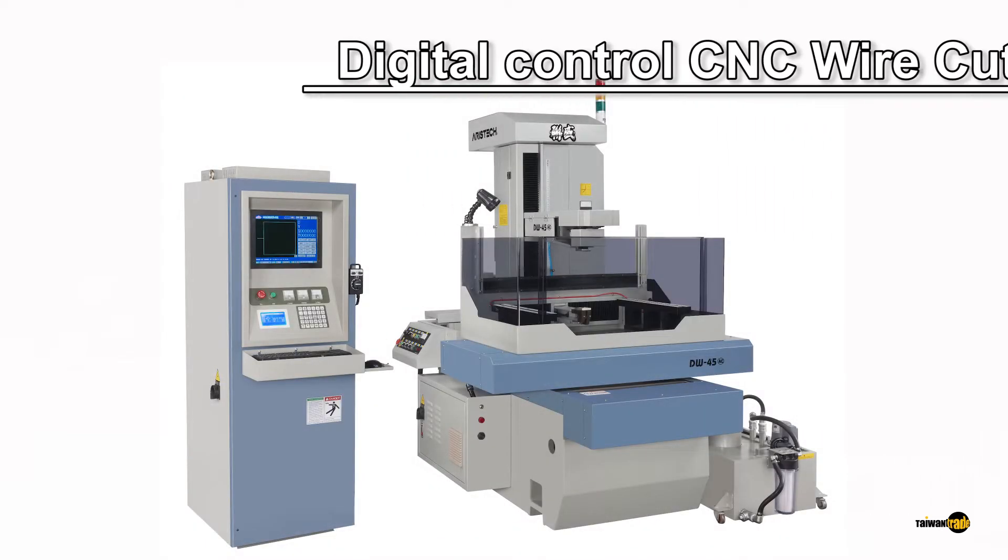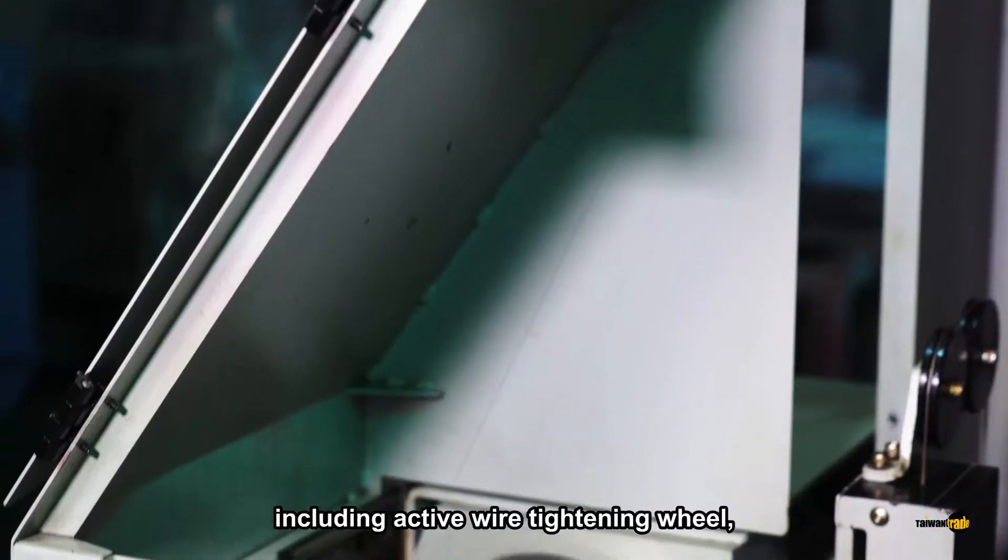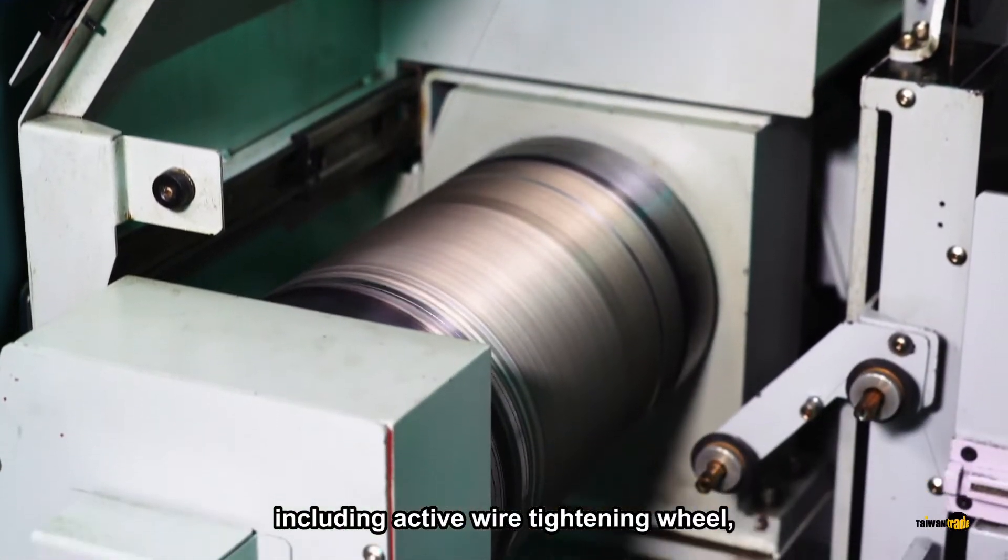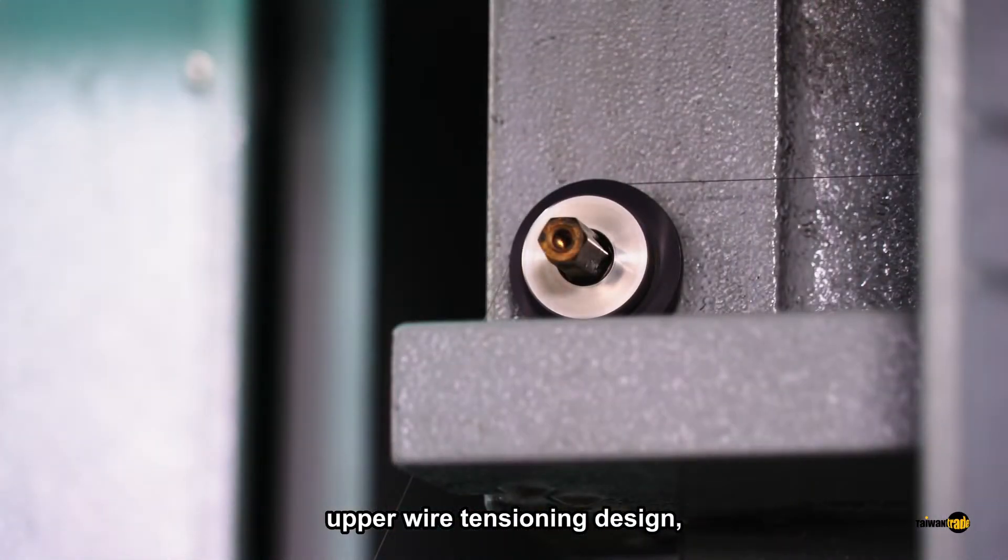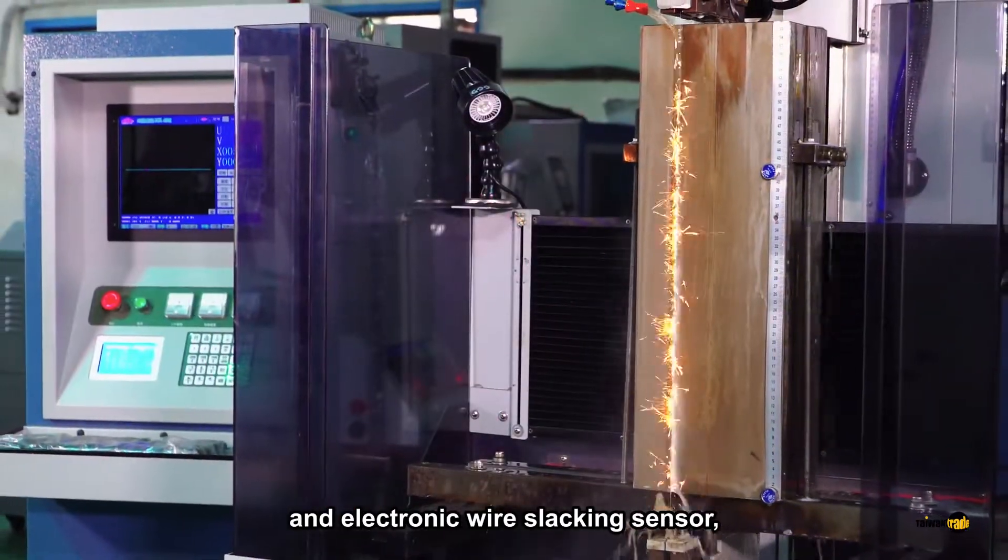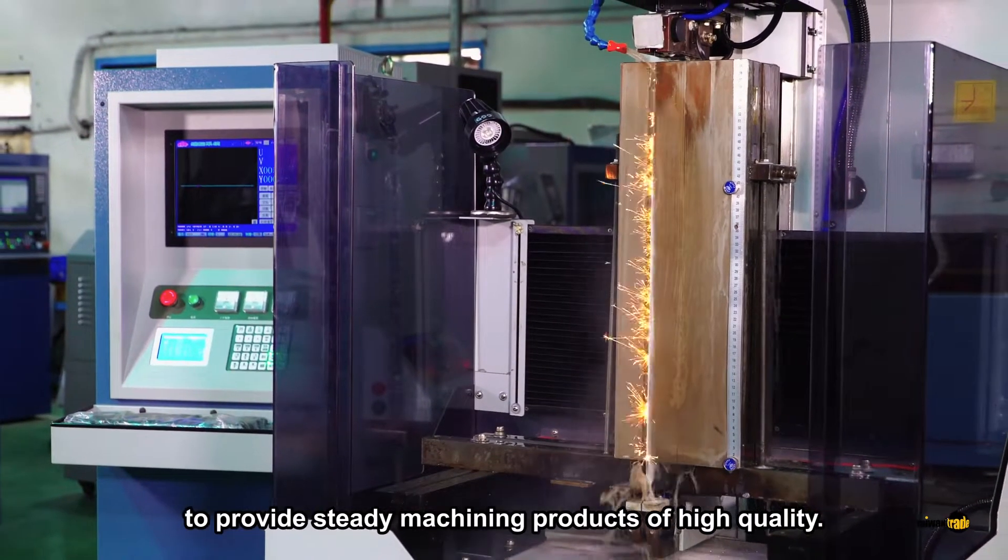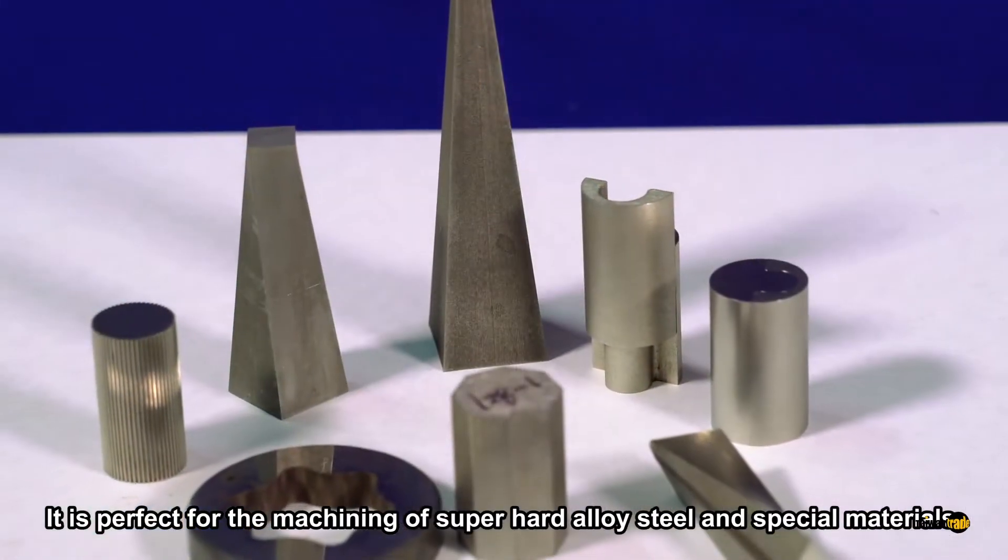Digital control CNC wire cut EDM features multiple patented designs, including active wire tightening wheel, upper wire tensioning design, intelligent automatic LCD mode, and electric wire slacking sensor to provide steady machining products of high quality.